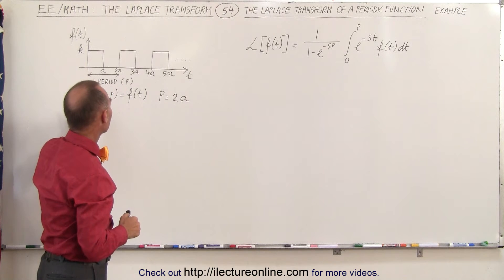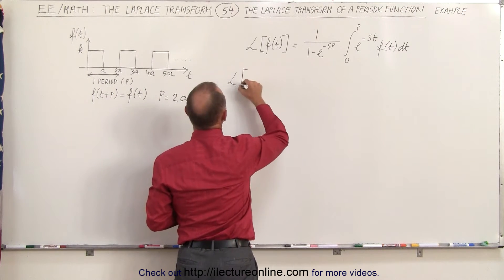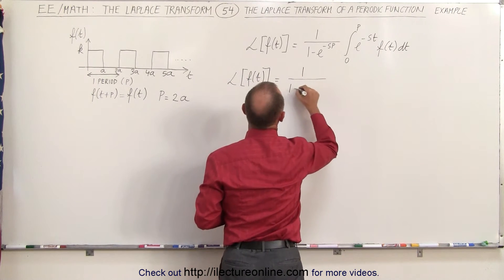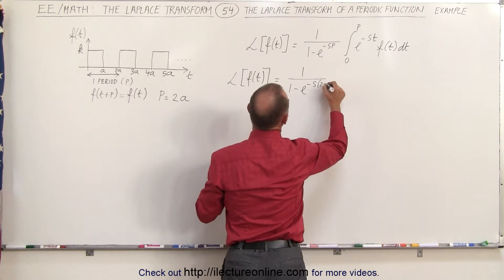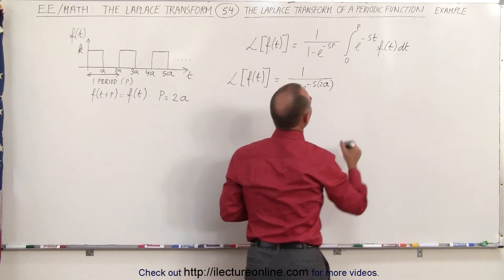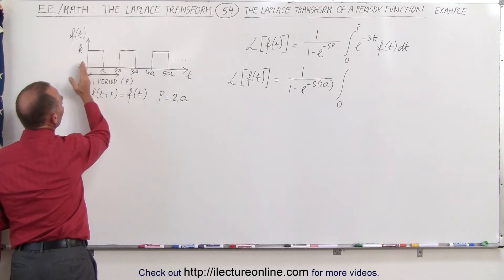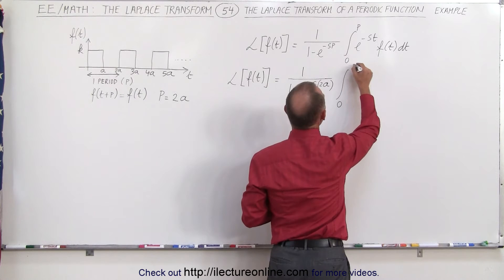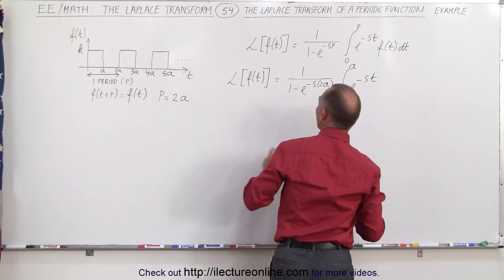For this particular periodic function, the Laplace transform is going to be equal to 1 divided by 1 minus e to the minus s times p. Now the period is 2a, so we multiply by 2a. And times the integral from 0 to — notice that we only need to integrate to the end of the pulse, not to the beginning of the new pulse because there's nothing going on in between. So in this case the limits are going to be from 0 to a, not from 0 to 2a, of e to the minus s times t times the function of t.